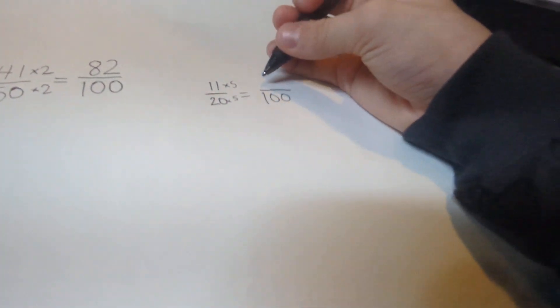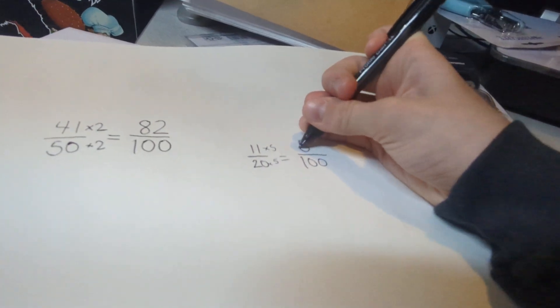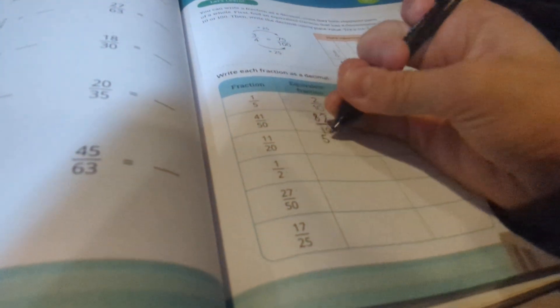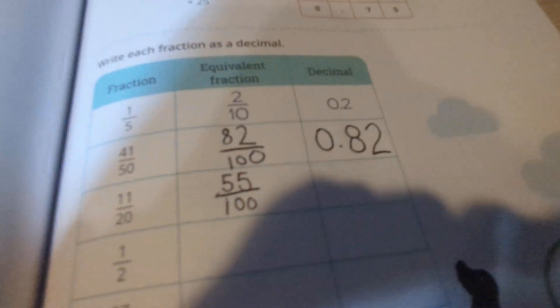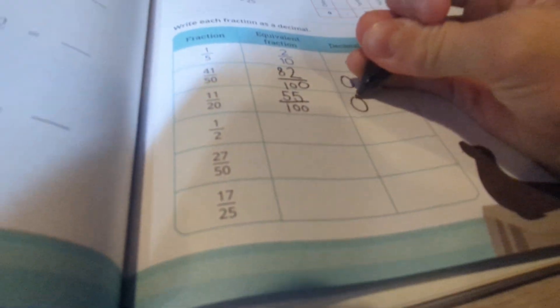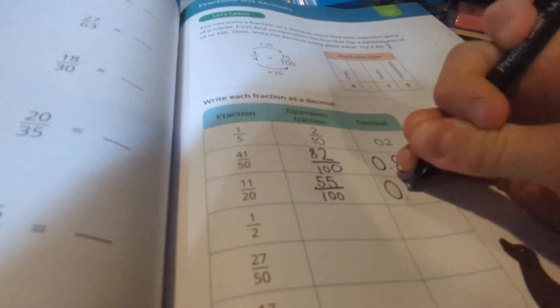11 times 5 is 55. So the answer is 55, so the answer is 55 hundredths. And the decimal is 0.55.